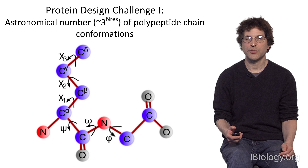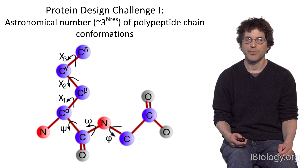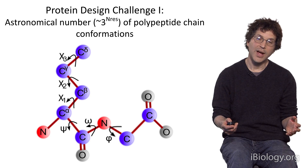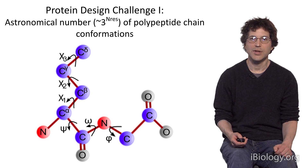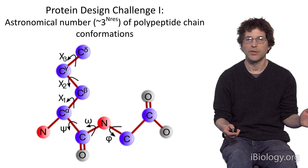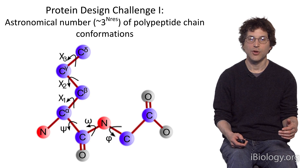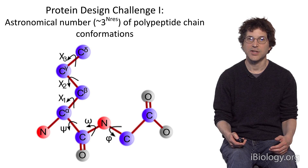Both of these problems, the protein structure prediction problem and the protein design problem, are very hard problems. The first reason they're hard is that a polypeptide chain can have a very large number of different possible conformations. For each amino acid in a protein chain, there are many rotatable bonds. Each amino acid can have on the order of three different conformations. So, if you have a 100-residue protein, the number of possible conformations is 3 to the N_res power — that's 3 to the number of amino acids — which is an astronomical number.